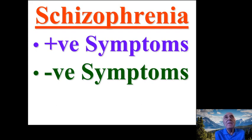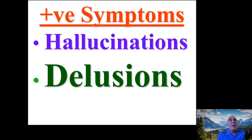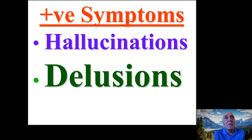Some patients suffer from positive symptoms, others from negative symptoms, and another group may experience positive symptoms at one time and negative symptoms at another. This is very important when considering drug therapy, as we need different treatments to manage either positive or negative symptoms. The positive symptoms include hallucinations of different kinds — they can be visual, where people see objects that do not exist.